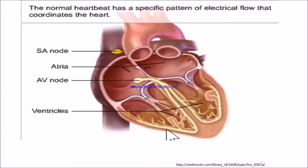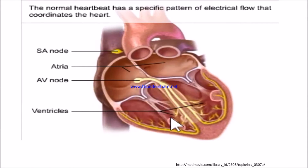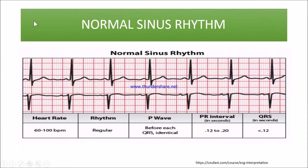Let's see what is normal sinus rhythm. Normal sinus rhythm refers to the normal heart rhythm — it is a normal flow of the electrical system. When there is a normal flow of the electrical system, the heart rate will be 60 to 100 beats per minute.